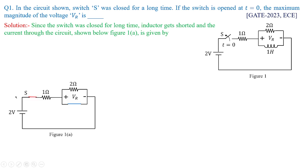In figure 1a, this is how the circuit would look: 2 volts will supply this combination of 1 ohm and 2 ohms in parallel with the inductor, which gets shorted because of its property — inductor under steady state behaves as short circuit. So you have 2 volts connecting in series with 1 ohm, and the current flows through this short wire and comes back to the 2 volt source.